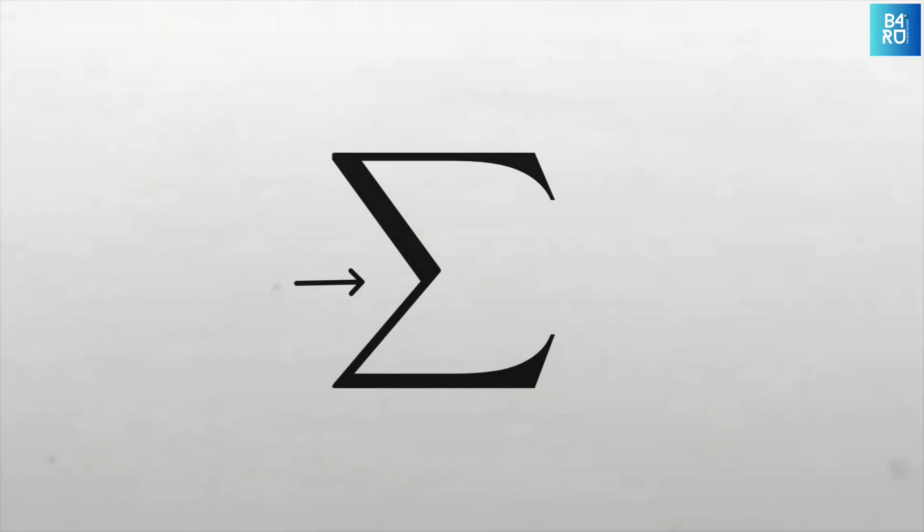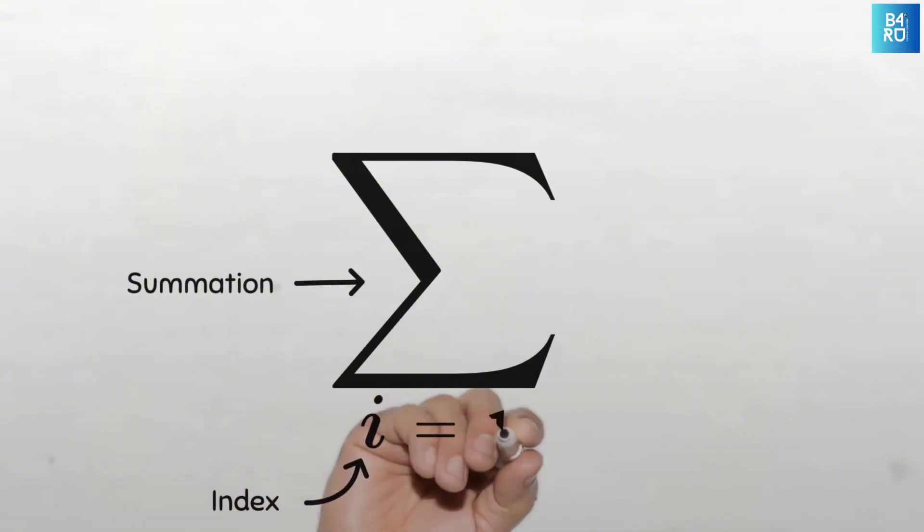First is the summation symbol. It is the capital form of the Greek letter sigma. It means addition or summation and this is usually used with an index at its bottom. This index is usually denoted as lowercase i and this index is usually equated with a starting value, and in this case is one.